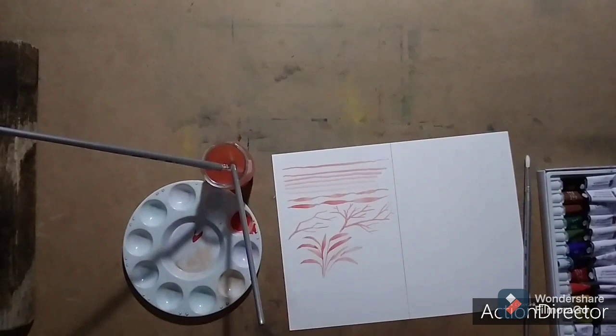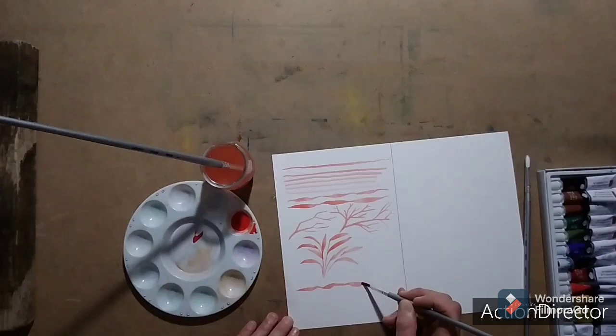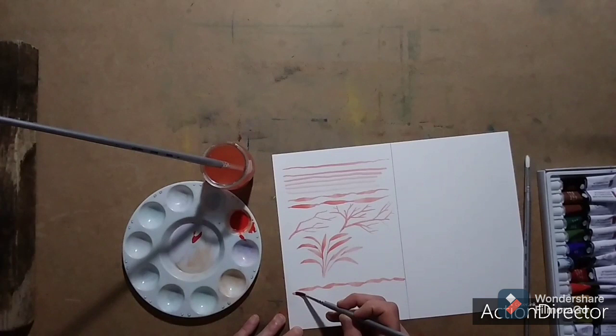My last exercise for you is try to paint lines with varying widths, but group them together without having them touch. So you should be able to see a thin white negative space between each line. Take your time for this. This demands a lot of concentration and control.